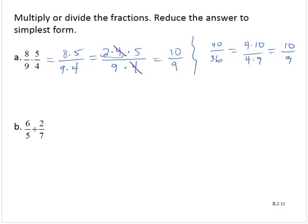6 fifths divided by 2 sevenths. To divide, we multiply by the reciprocal. So I rewrite this as 6 fifths times the reciprocal of 2 sevenths, which is 7 halves.